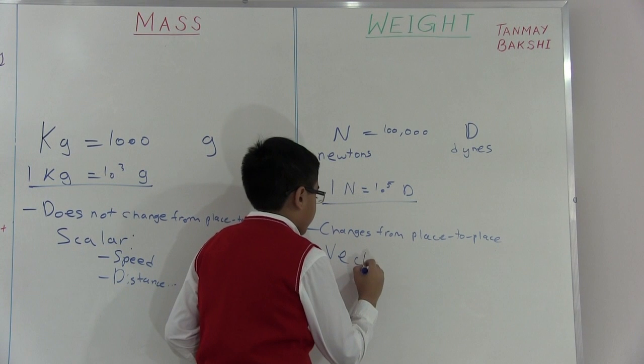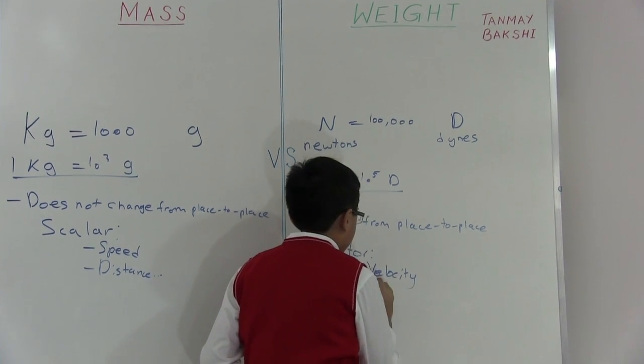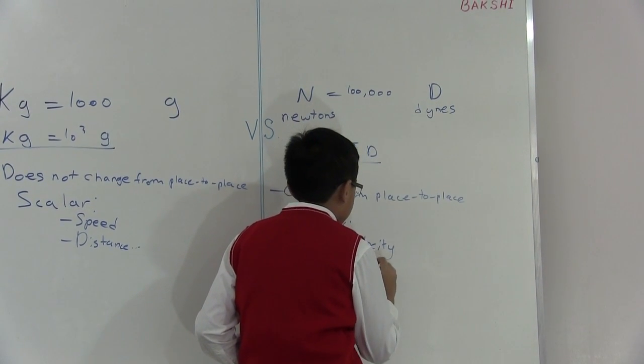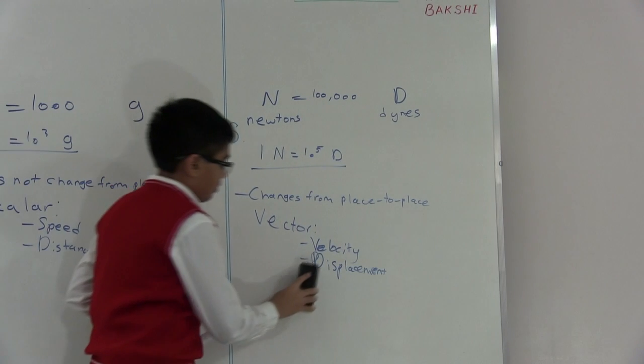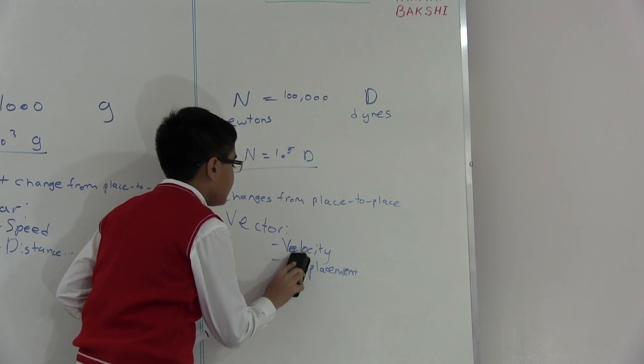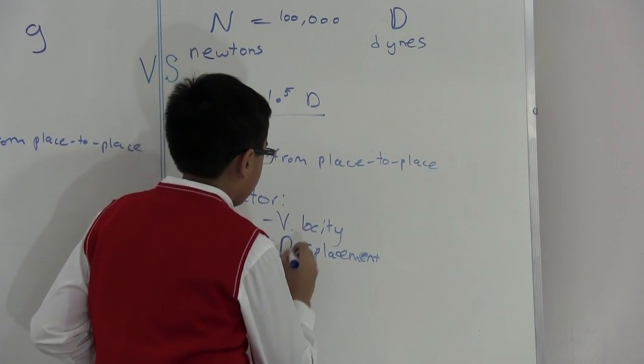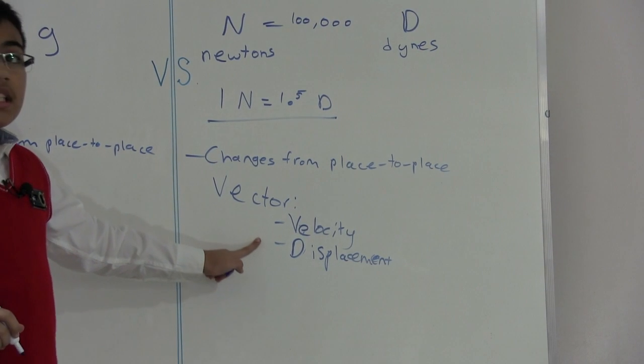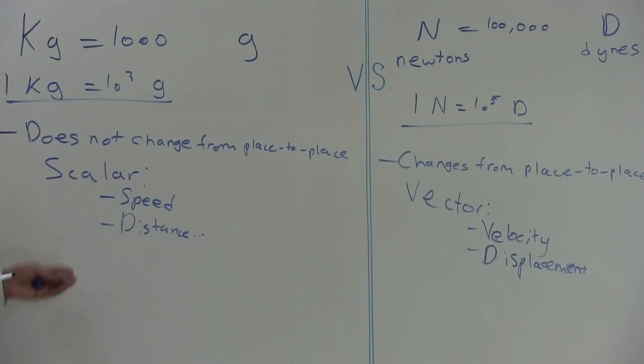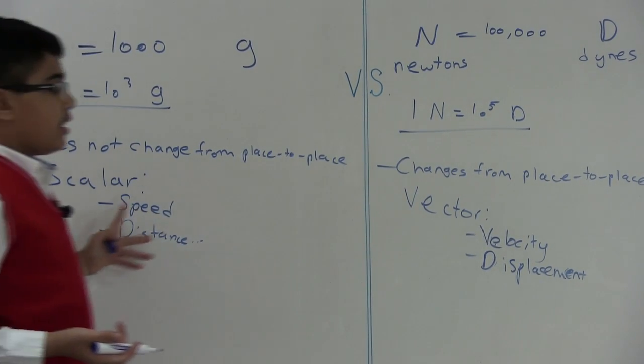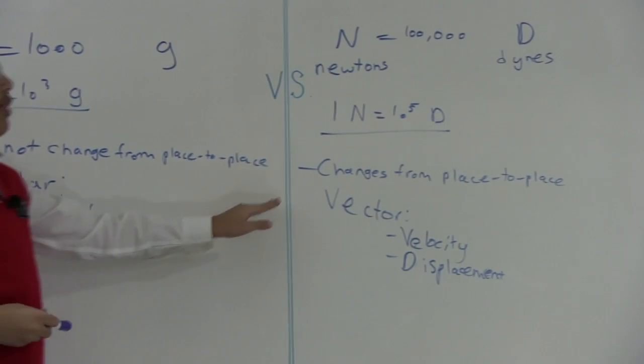For a vector there could be something like velocity and displacement. I'm actually going to rewrite that so you can actually see it. So there's velocity and also displacement for a vector. Now I want you to find out what's common between velocity and displacement, and what's common in speed and distance. And also what's the difference from all these scalar options and all these vector options.